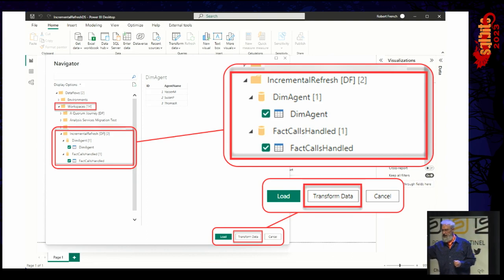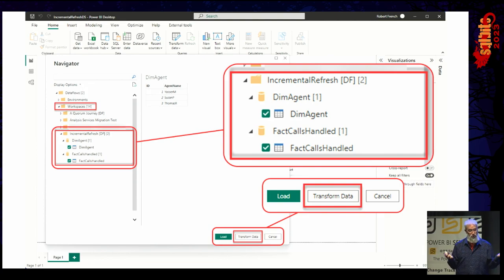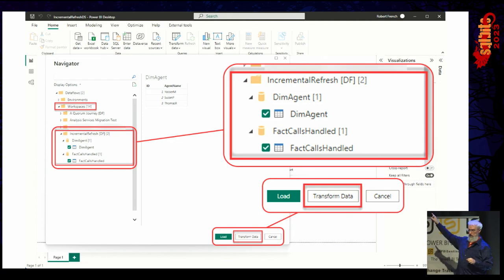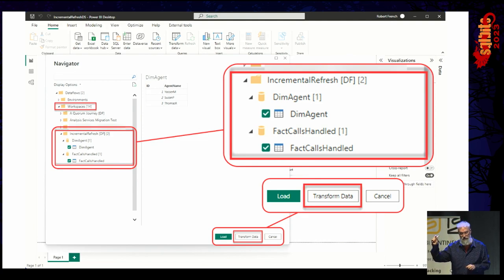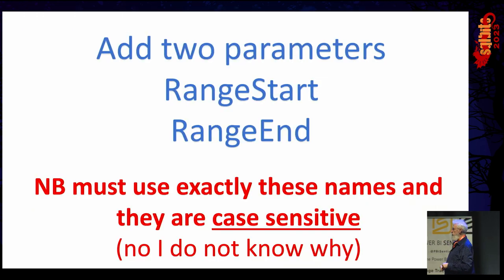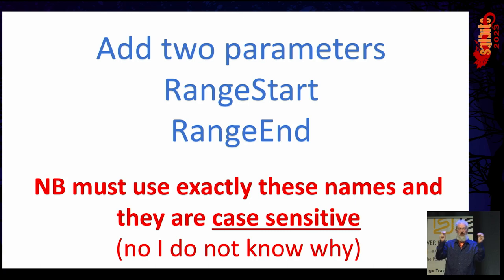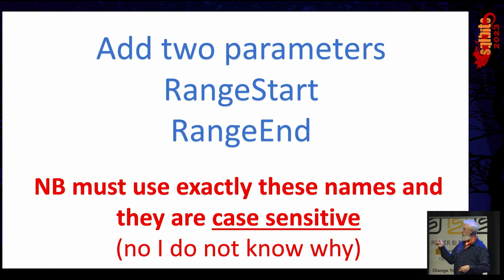I find the dataflow called Incremental Refresh DF, go in there, and find the dataflow. When I find the dataflow, I can select the tables — there may be 20 or 10 tables; you can pick as many as you want. I'm going to select two tables from the dataflow: dim agents and fact calls handled. Then I click on the Transform Data button.